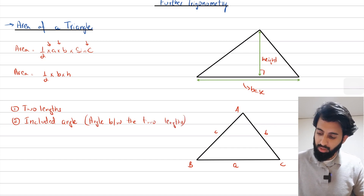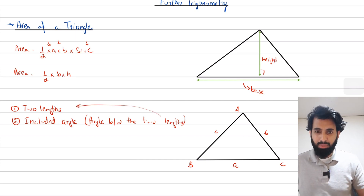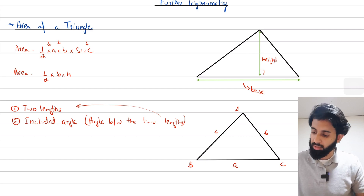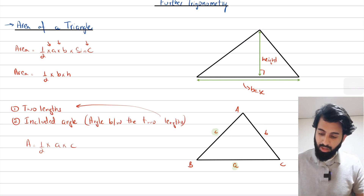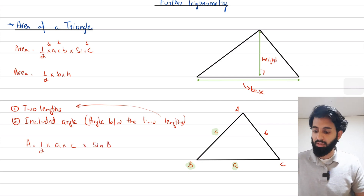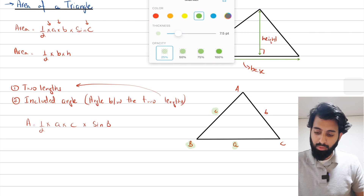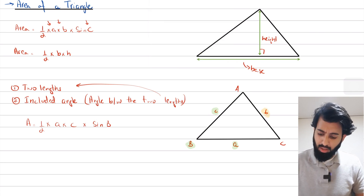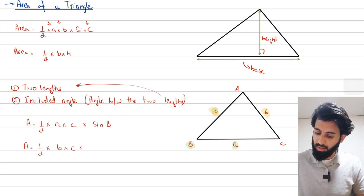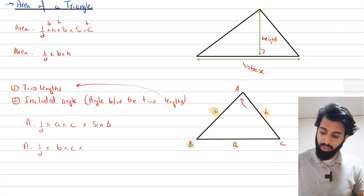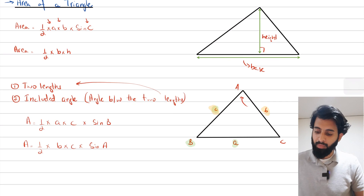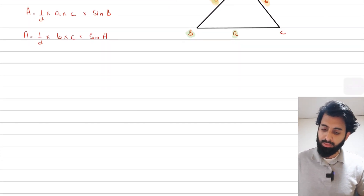The formula doesn't have to be exactly half times a times b times sine C. For example, if you're using lengths a and c, the included angle is B, so the formula becomes half times a times c times sine B. Similarly, if you have lengths b and c, the formula is half times b times c times sine A.